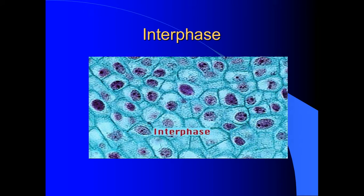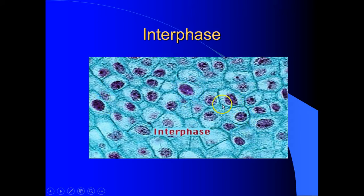Here you see cells in interphase. You can see cell membranes and cell walls that have been stained so they're visible. The darker purple circles are the nucleus, and inside the nucleus is where you have your DNA.